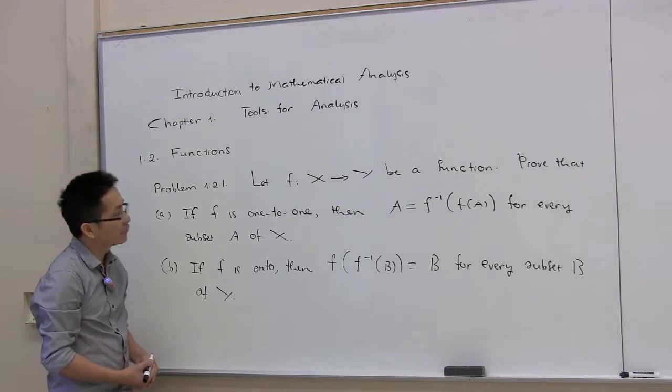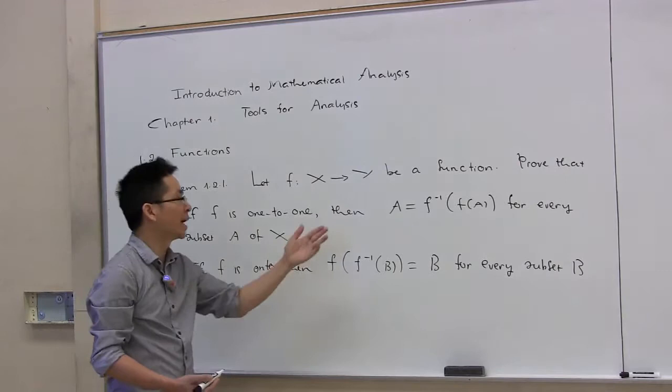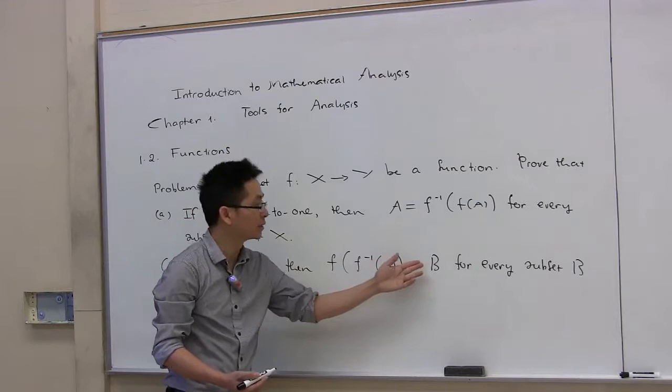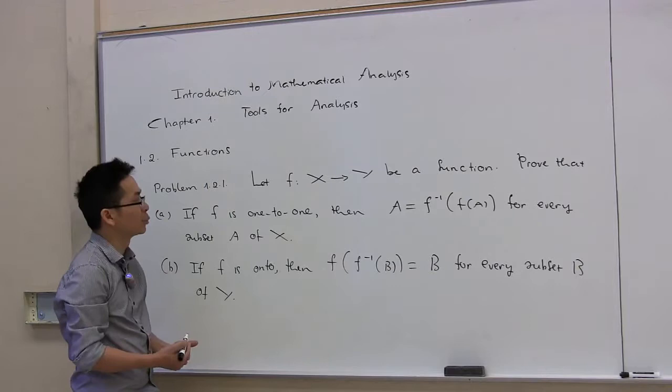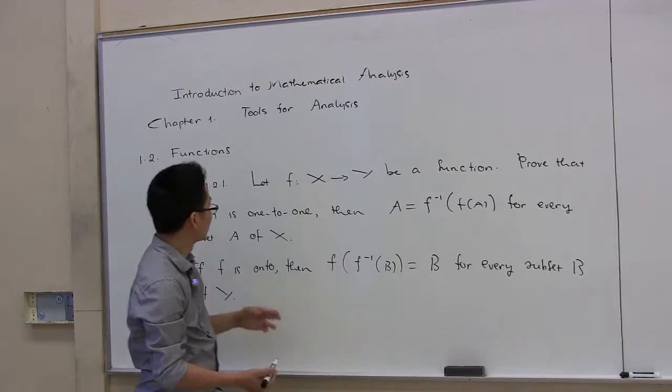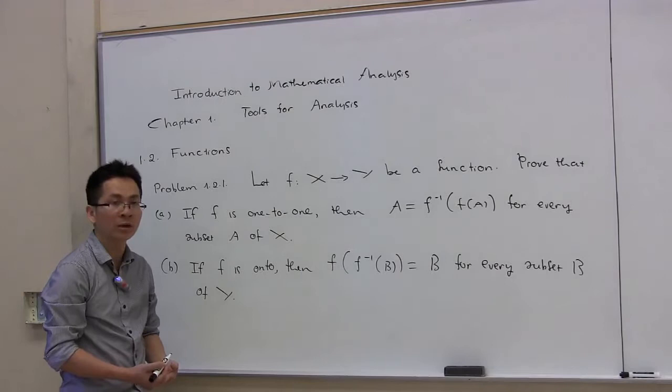In this video, we're going to talk about problem 1.2.1 from the textbook. Let f from X to Y be a function. Prove that if f is 1-to-1, then A is equal to f inverse of f of A for every subset A of X. In the second part, we have to prove that if f is an onto function, then f of f inverse of B is equal to B for every subset B of Y.